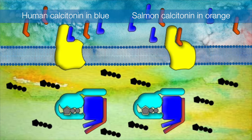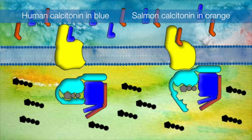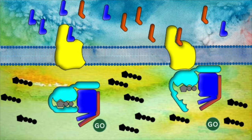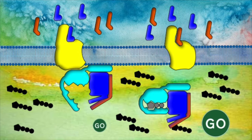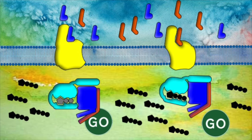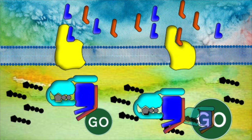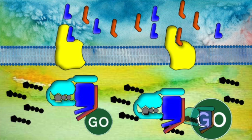GPCRs are able to explore a range of conformational space. When a stimulating ligand arrives, there is conformational selection of the receptor depending on which ligand binds. In the current model for differential efficacy, the ligand-induced receptor conformations have divergent affinities for the downstream effector — in this case, a G-protein. As a result of these divergent affinities, the magnitude of the cellular response differs according to the stimulating ligand.